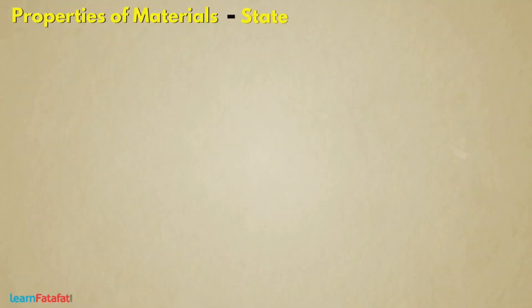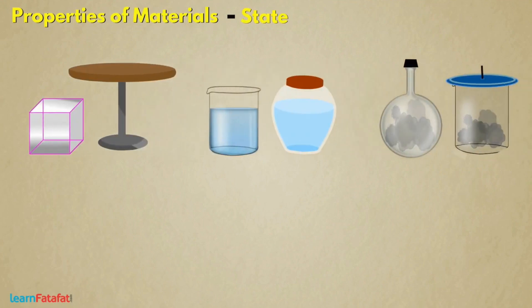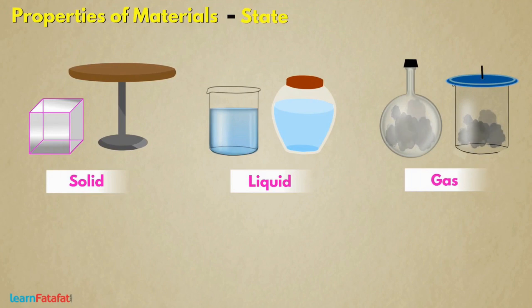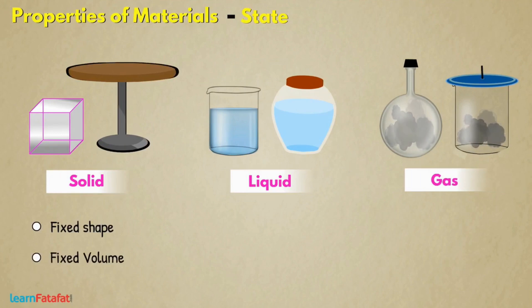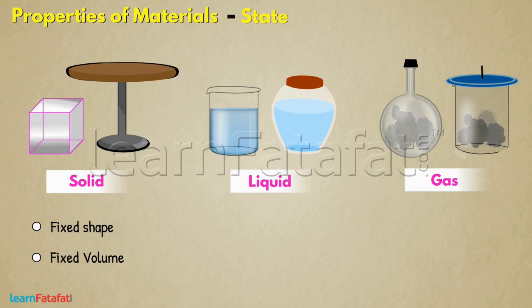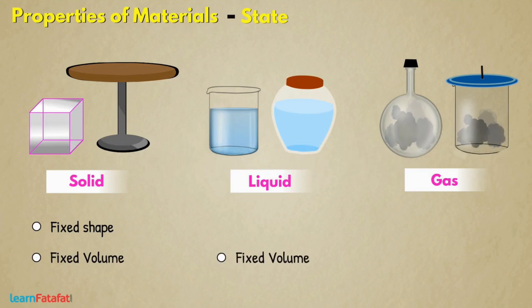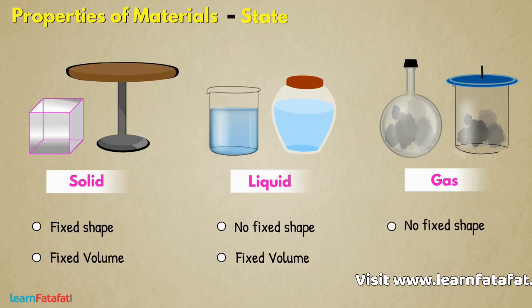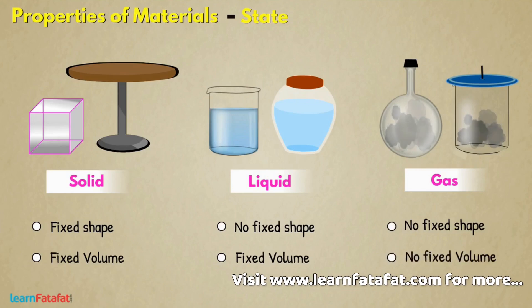State: Basically, materials exist in three states — solid, liquid, and gas. Those which have fixed shape and volume are solids. Those which have fixed volume but do not have fixed shape are liquids. And those which neither have fixed shape nor fixed volume are gases.